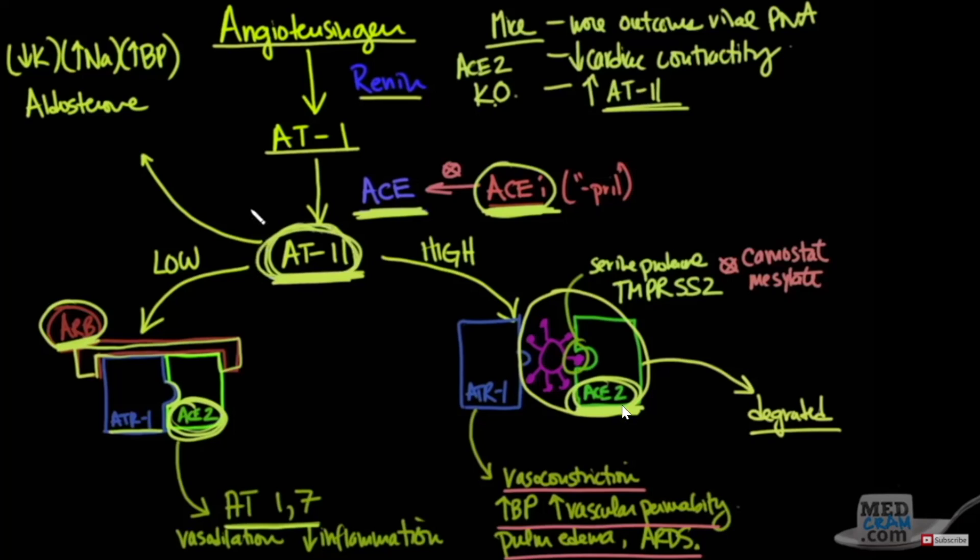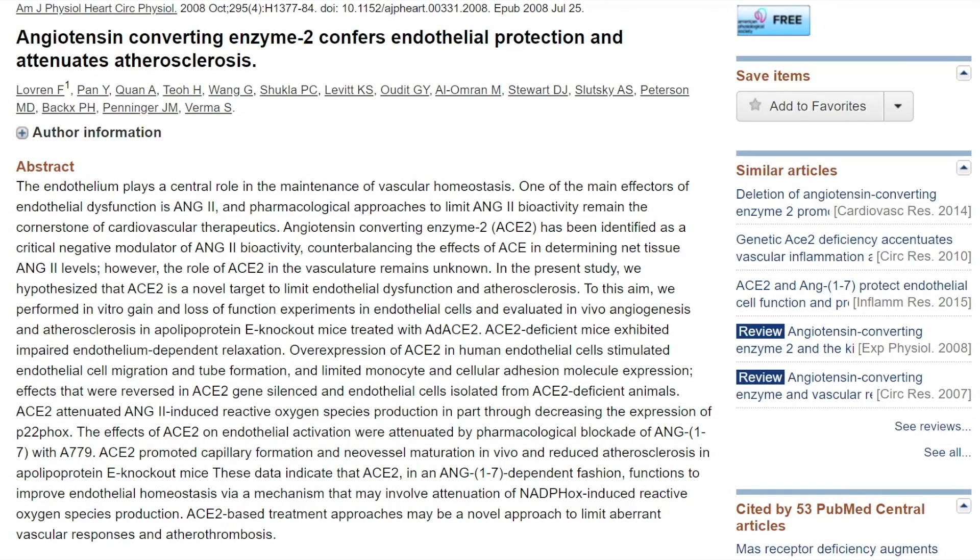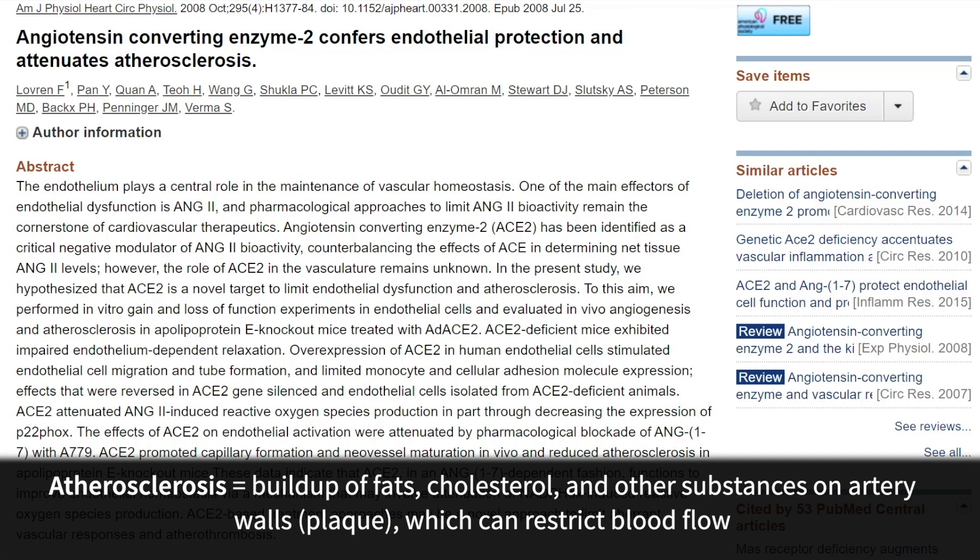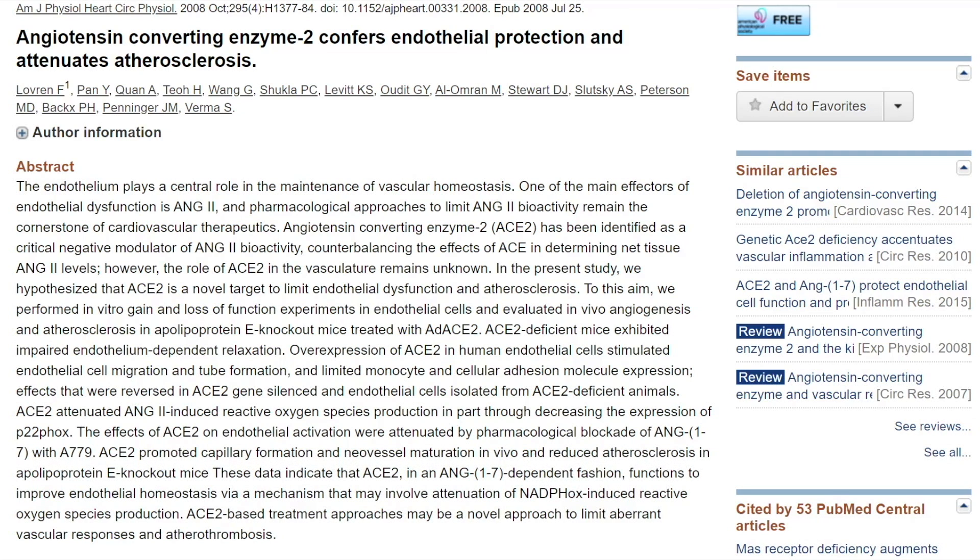Now here was a very interesting study that was published in 2008 looking at angiotensin converting enzyme 2, or ACE2, looking at the endothelial protection and what it does with atherosclerosis. In this situation, they used mice and they knocked out the ACE2 gene to see what would happen. The ACE2 knockouts would be as if the mice had been infected with the coronavirus and taken out their ACE2 enzymes, and in this situation they showed that ACE2 deficient mice exhibited impaired endothelium-dependent relaxation. In other words, they were constricting. It also talks about how they know that ACE2 has been identified as a critical negative modulator of angiotensin 2 bioactivity, counterbalancing the effects of ACE.